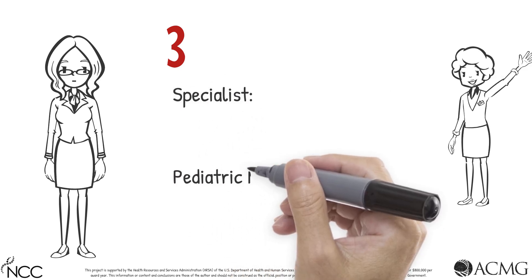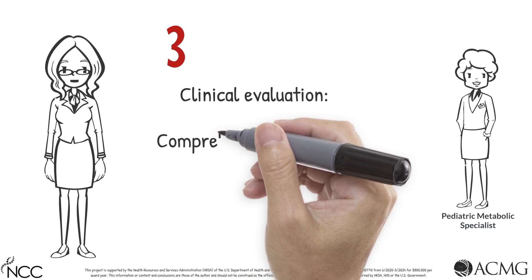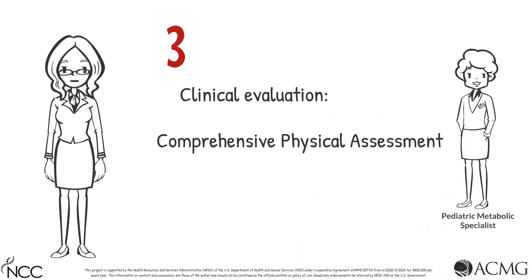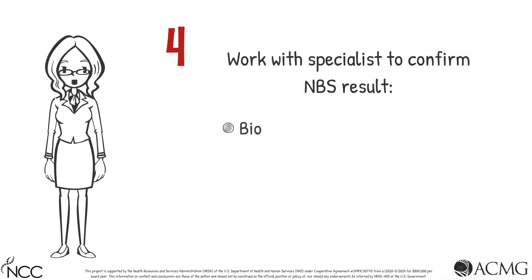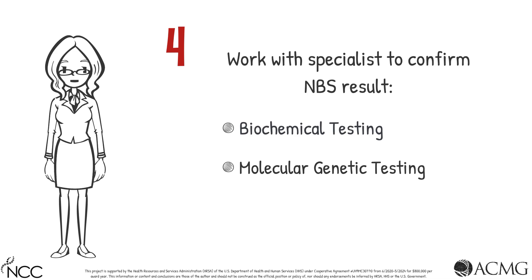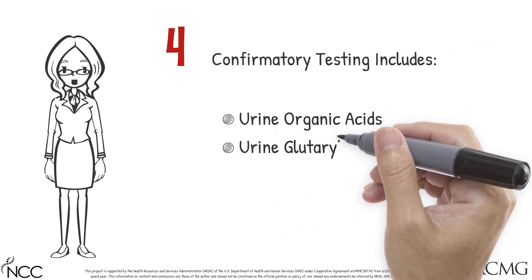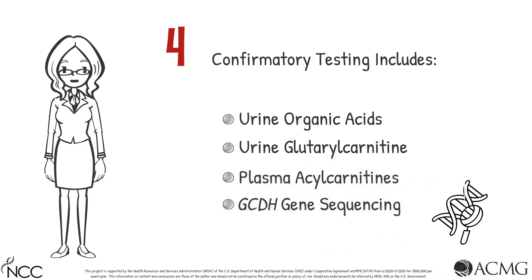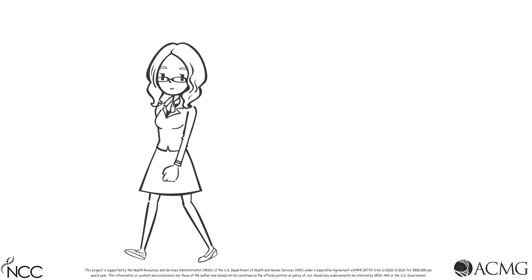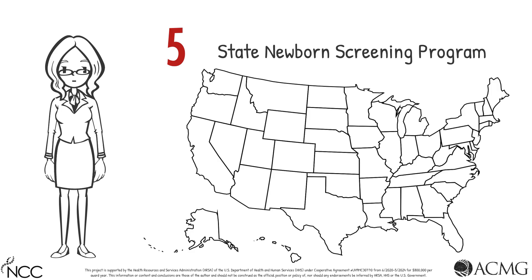The specialist should be a pediatric metabolic specialist. The clinical evaluation should include a comprehensive physical assessment by an experienced Glutaric Acidemia Type 1 specialist. Fourth, working with the appropriate specialist, take steps to ensure biochemical and/or molecular confirmation of the newborn screening result. Confirmatory testing includes urine organic acids, urine glutarylcarnitine, plasma acylcarnitines, and GCDH gene sequencing. Fifth, report the final diagnostic outcome back to your state newborn screening program.